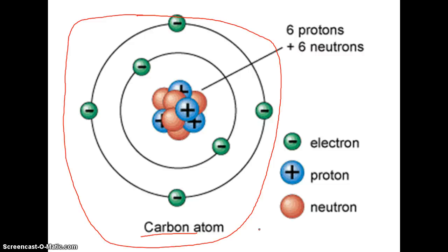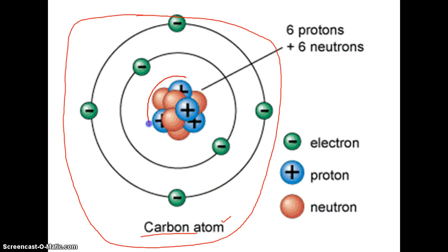Remember, the atom is considered the building block of matter and all matter is made of atoms, but there are smaller pieces to atoms. There are even tinier things we need to understand in order to understand how atoms are composed. We'll start in the central part of the atom — this middle portion right here.